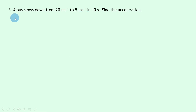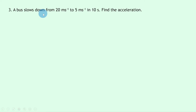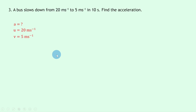Question three says a bus slows down from 20 meters per second to 5 meters per second in 10 seconds. Find the acceleration. Notice how the bus is slowing down this time, so we should expect a negative value for acceleration, showing us a deceleration. Writing down what we know: we're trying to find a, initial velocity u is 20 meters per second, and final velocity v is 5 meters per second.